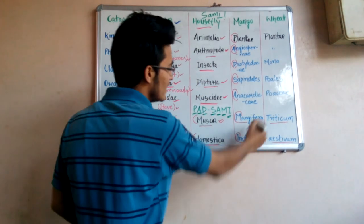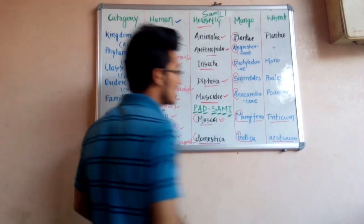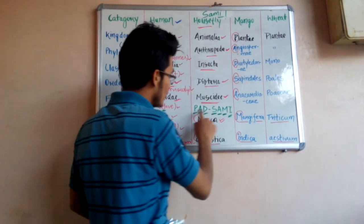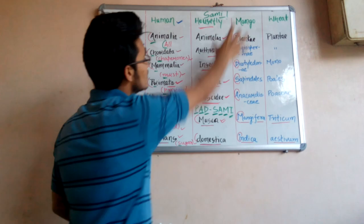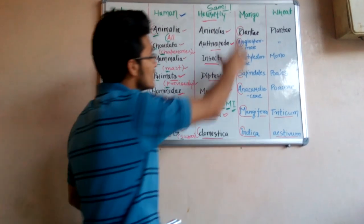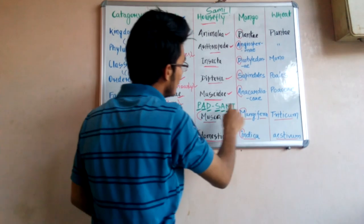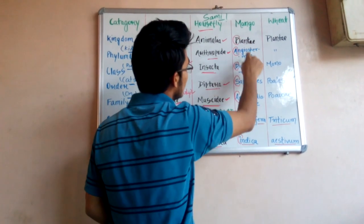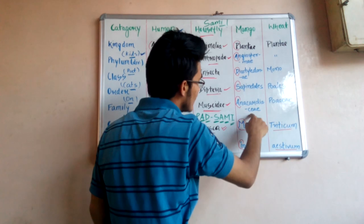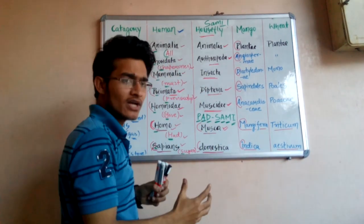'P' stands for Plantae, 'A' for Angiospermae, 'D' for Dicotyledonae, 'S' for Sapindales, 'A' for Anacardiaceae, 'M' for Mangifera, and 'I' for indica. Mangifera indica is the scientific name of mango, separately underlined in accordance with binomial nomenclature. So P-A-D-S-A-M-I, 'Pad Sami,' is the trick to memorize the taxonomical hierarchy of mango.